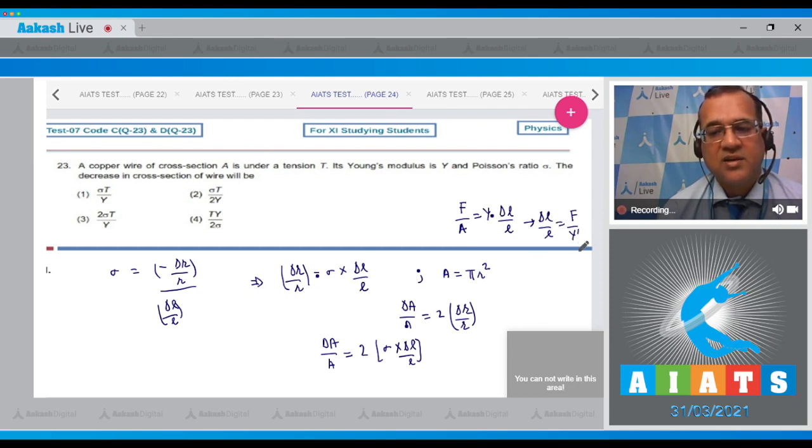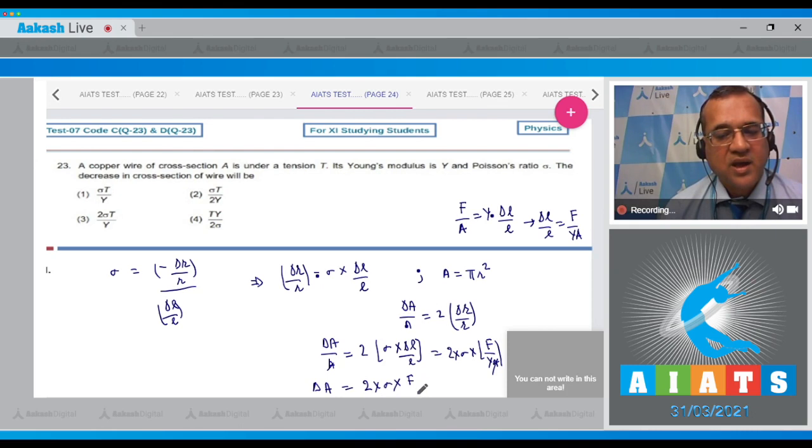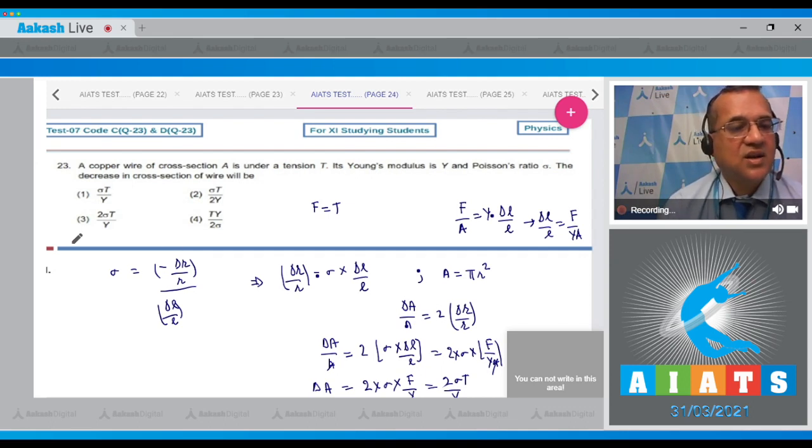So I pick up from here that delta L by L is equal to F upon Y A. So I'll replace this by F upon Y A and from both sides A cancels out. So therefore, delta A is equal to twice sigma F upon Y and that should be your answer. The F is given equal to the tension T. So fill up here. This is 2 sigma T upon Y. And the answer 3 is 2 sigma T upon Y. So answer to this question is the option number 3.